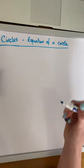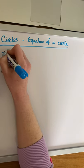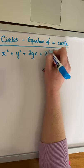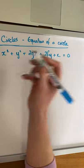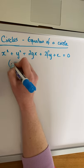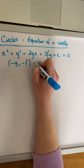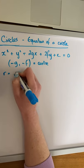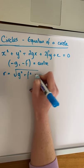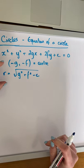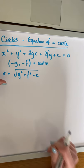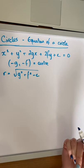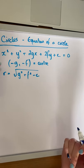Again, it's a formula from page 19 of the log tables. The general equation of a circle is x squared plus y squared plus 2gx plus 2fy plus c equals 0. In this equation, the center of the circle is (minus g, minus f), and the radius of the circle is the square root of g squared plus f squared minus c. We don't have to remember either of those — they're stated on page 19 of the log tables. Generally, with questions of this type, we will be given the general equation of a circle and asked to find the center and the radius.